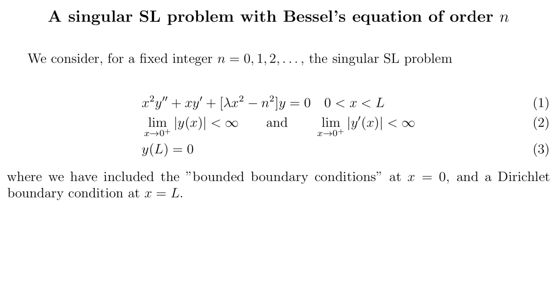Equation 1 is Bessel's equation of order n with a parameter lambda, and we've included the bounded boundary condition in equation 2 for the singular point x equals 0, and we have a Dirichlet boundary condition at x equals l. We want to know the eigenvalues and eigenfunctions of this singular Sturm-Liouville problem.